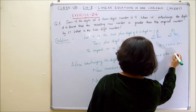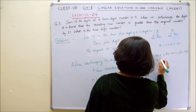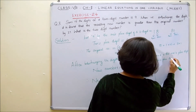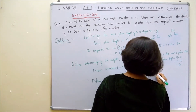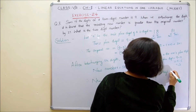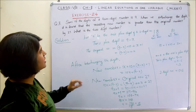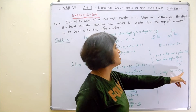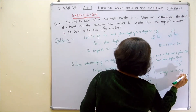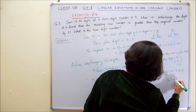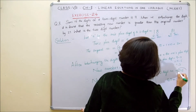Therefore x equals 6. This is the units digit. And therefore the tens digit equals 9 minus x, that is 9 minus 6 equals 3. Therefore the 2-digit number is 36. From here you can see that sum of the digits is 3 plus 6 equals 9. So the 2-digit number is 36.